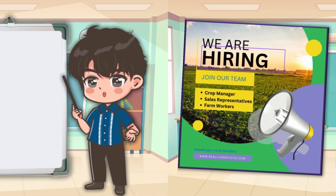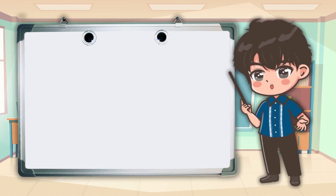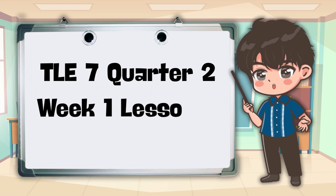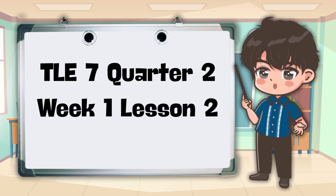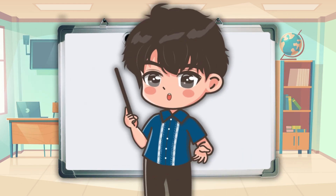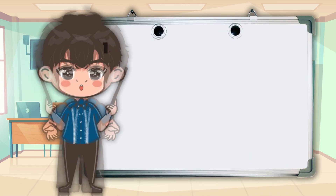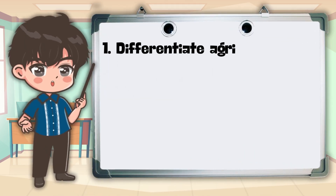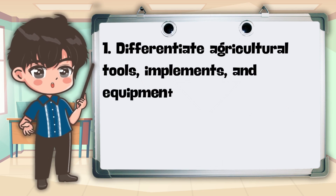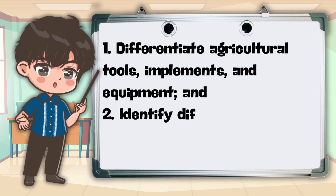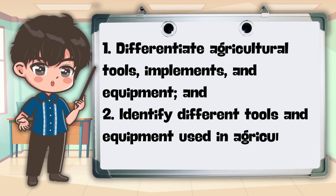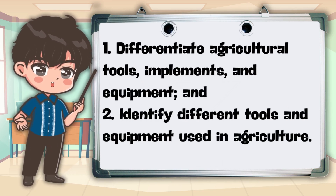Good day everyone. Welcome to our TLE 7 class, quarter 2, week 1, lesson 2. Today we are going to differentiate agricultural tools, implements, and equipment, and identify different tools and equipment used in agriculture.